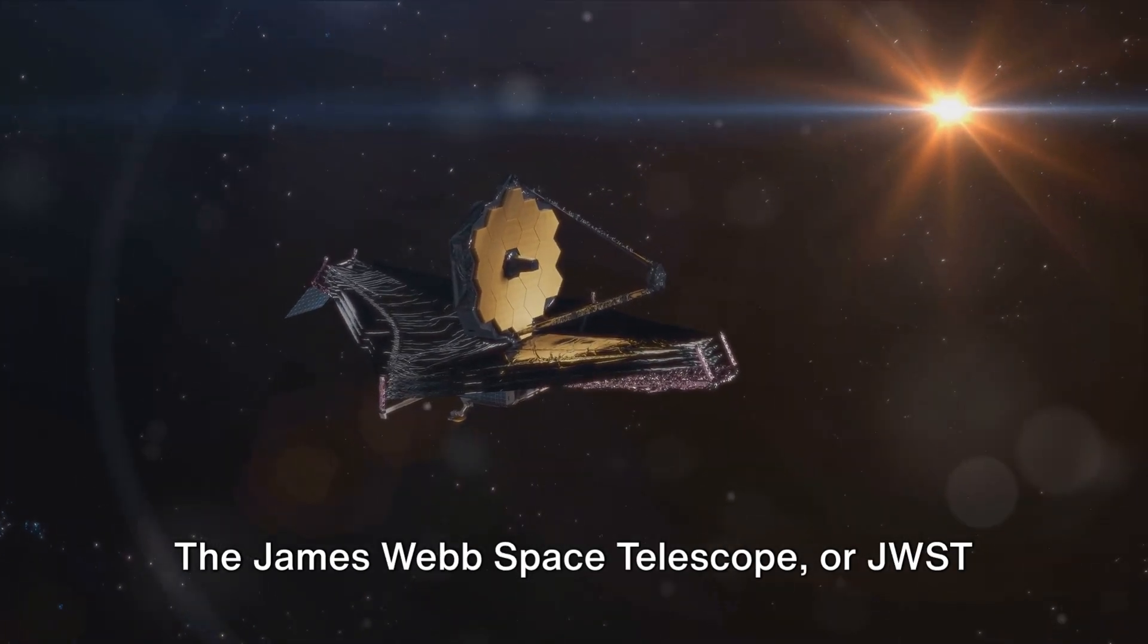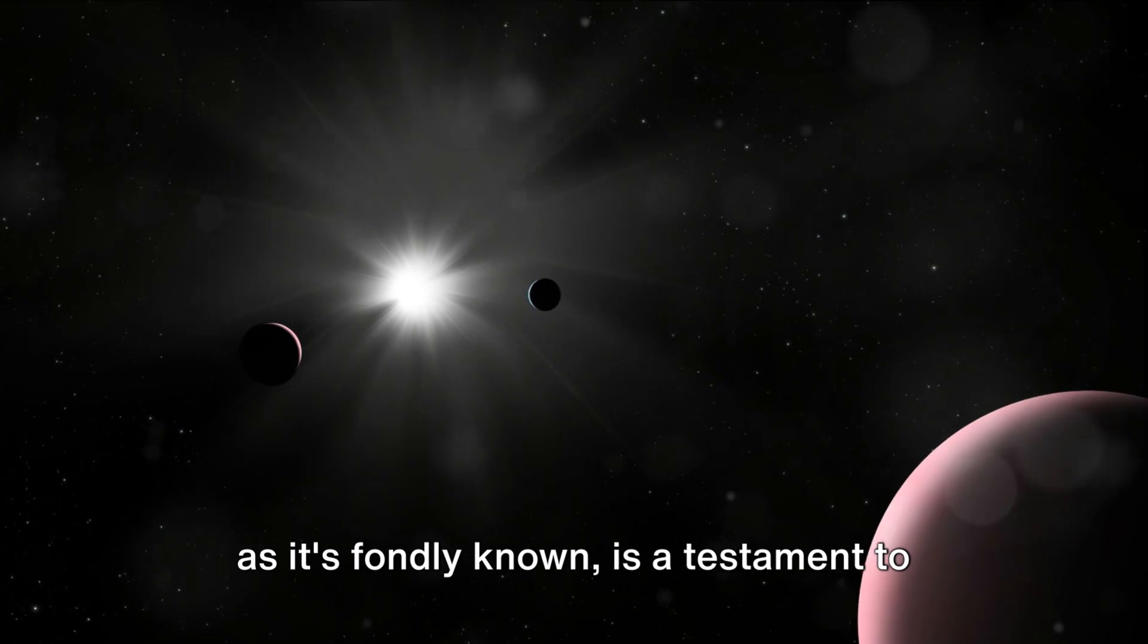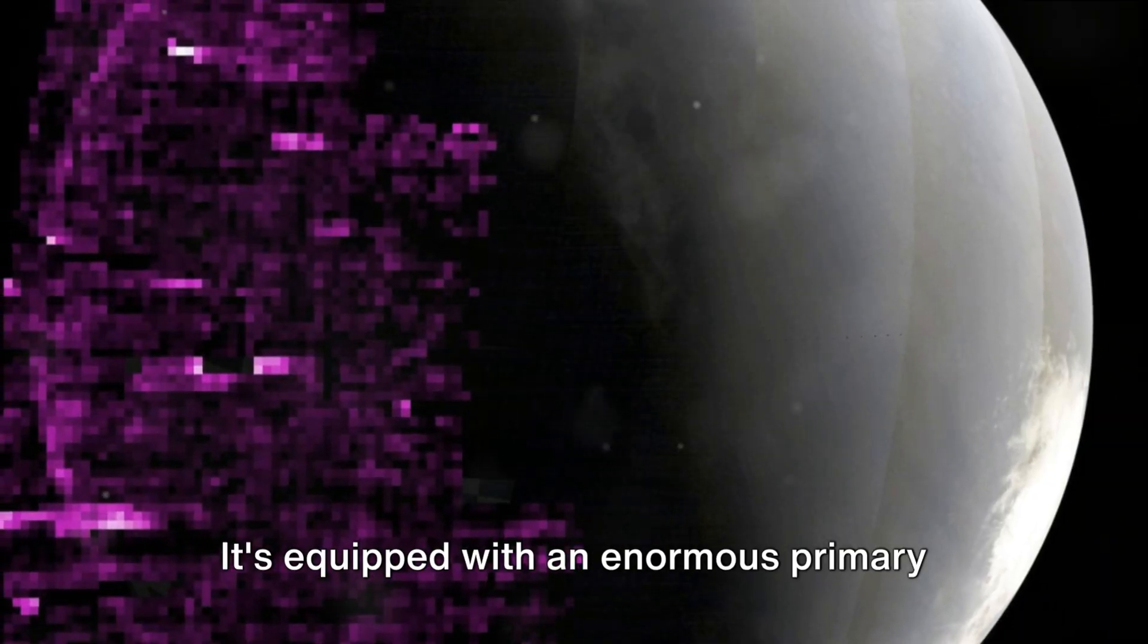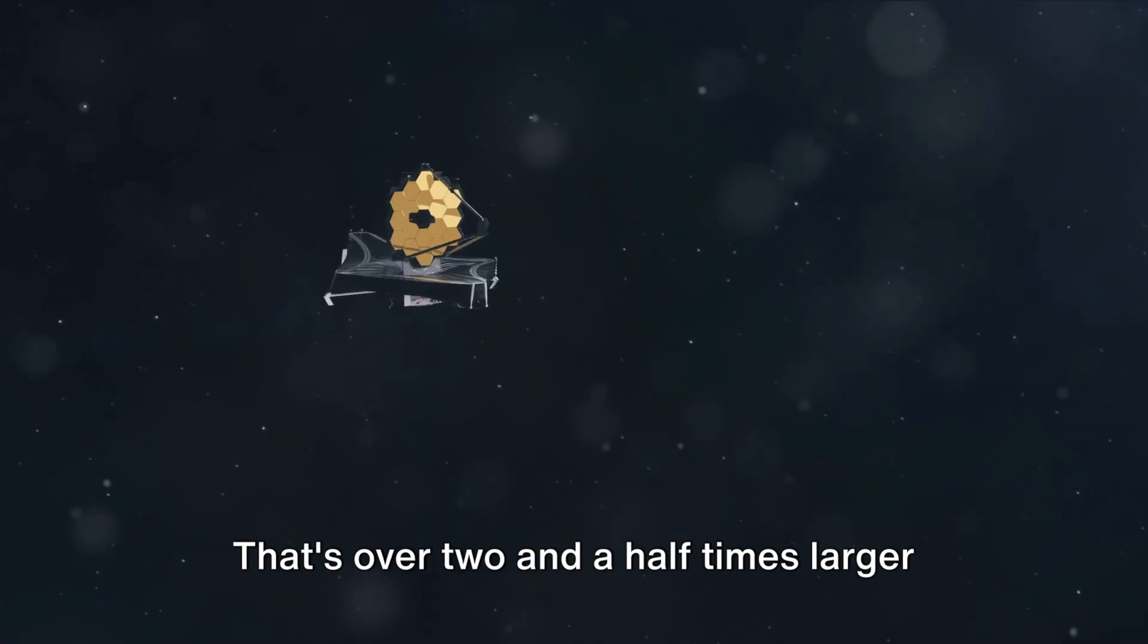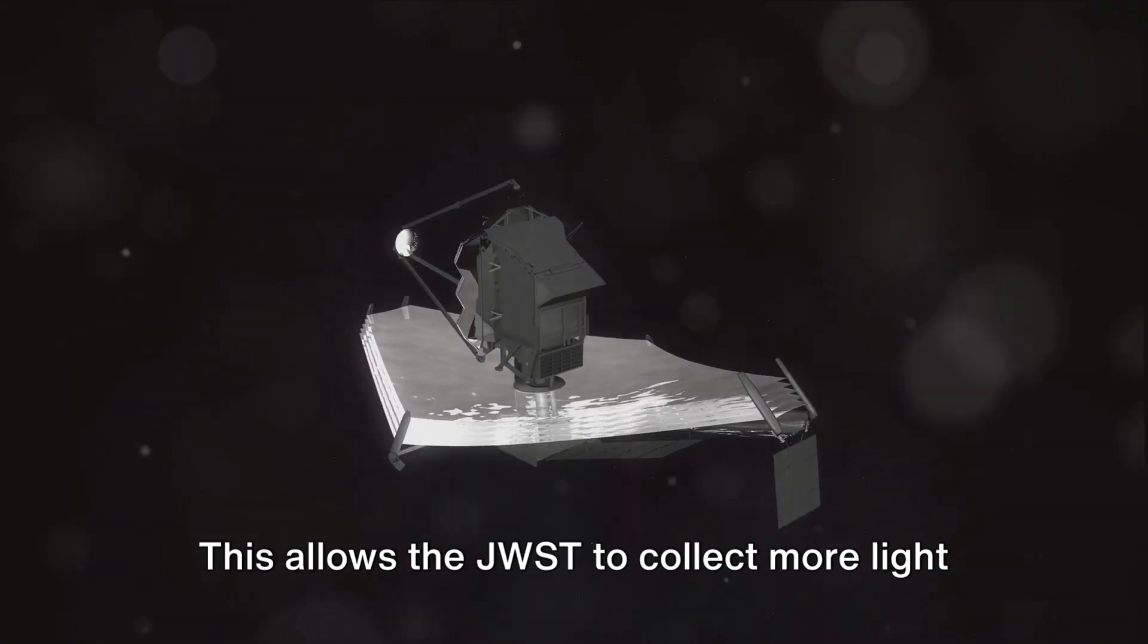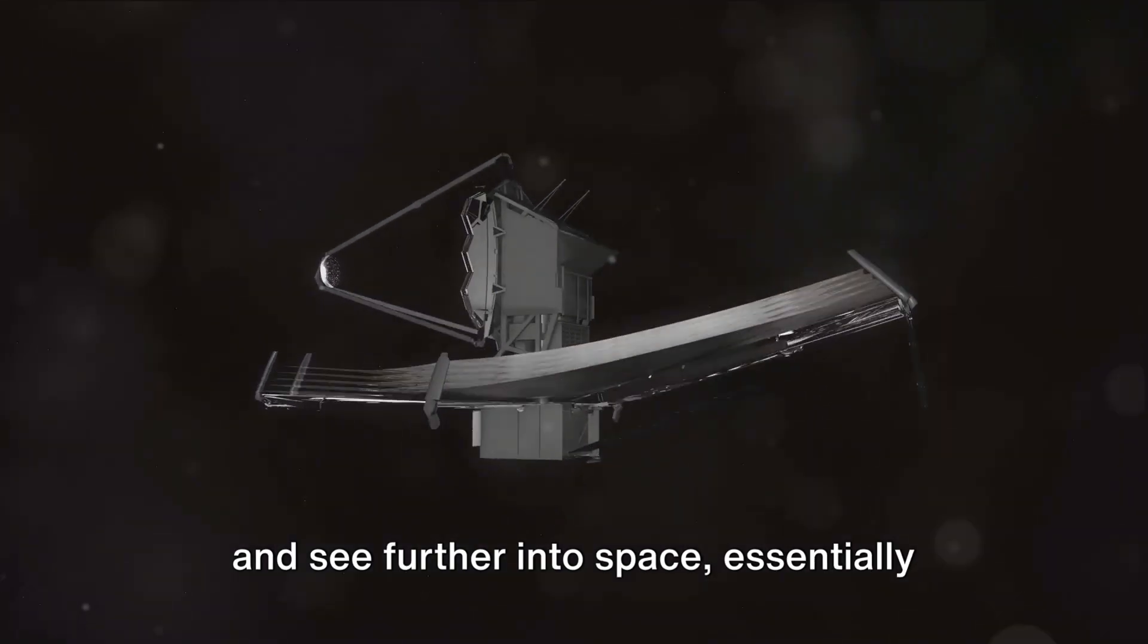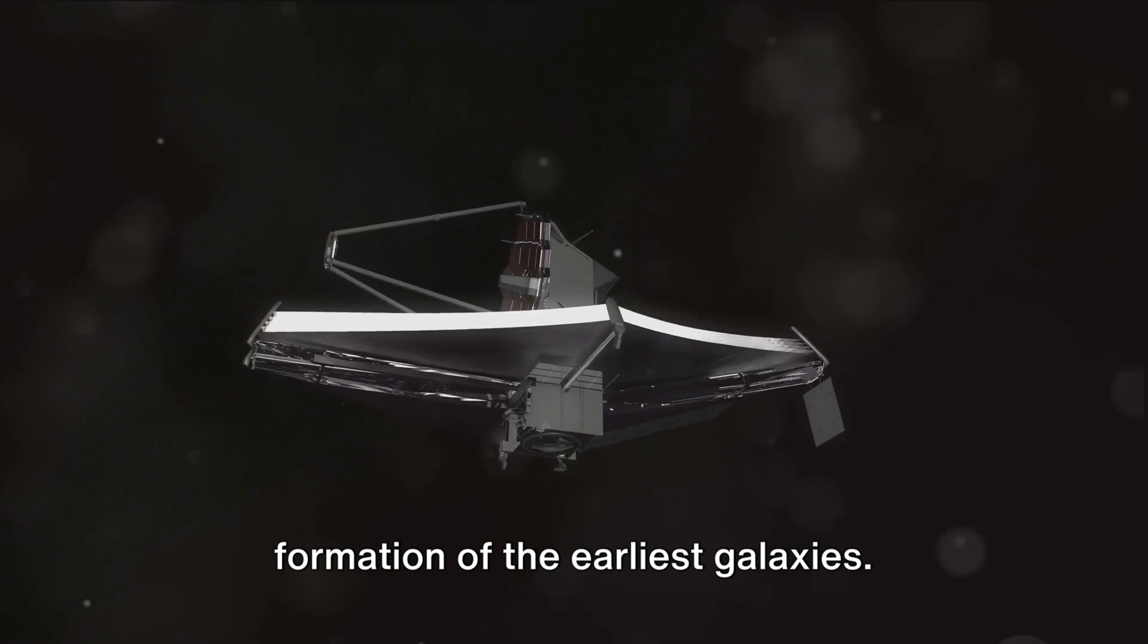The James Webb Space Telescope, or JWST as it's fondly known, is a testament to human ingenuity. It's equipped with an enormous primary mirror spanning over six and a half meters across. That's over two and a half times larger than the Hubble Space Telescope's mirror. This allows the JWST to collect more light and see further into space, essentially peering back in time to witness the formation of the earliest galaxies.